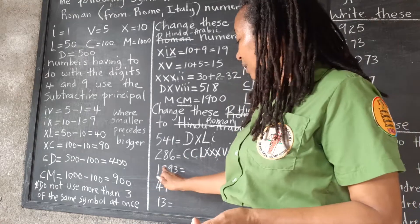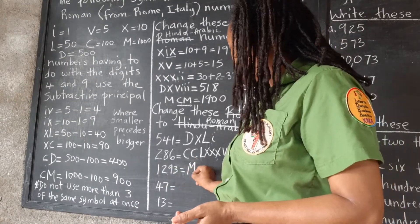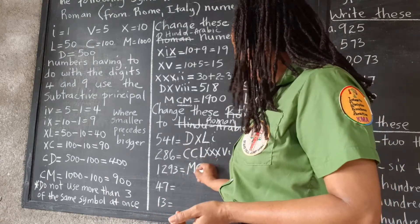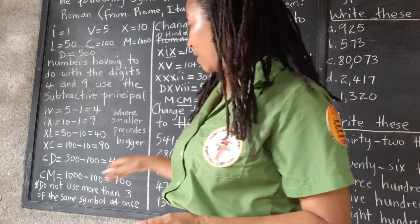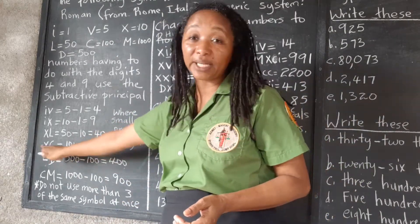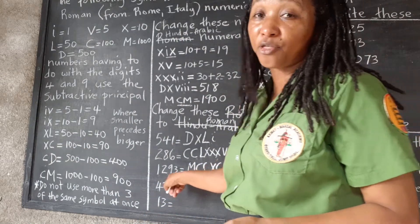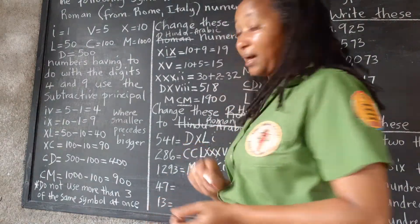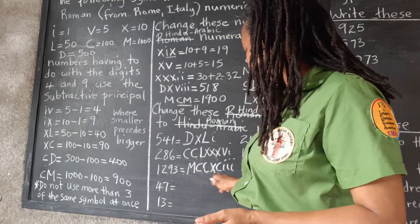For 1,293: M is 1000. Then 200 is CC. For 90, once we see the 9 we know we'll use the subtractive principle — XC is 100 take away 10. Then we need three 1s: III. So 1,293 is MCCXCIII.